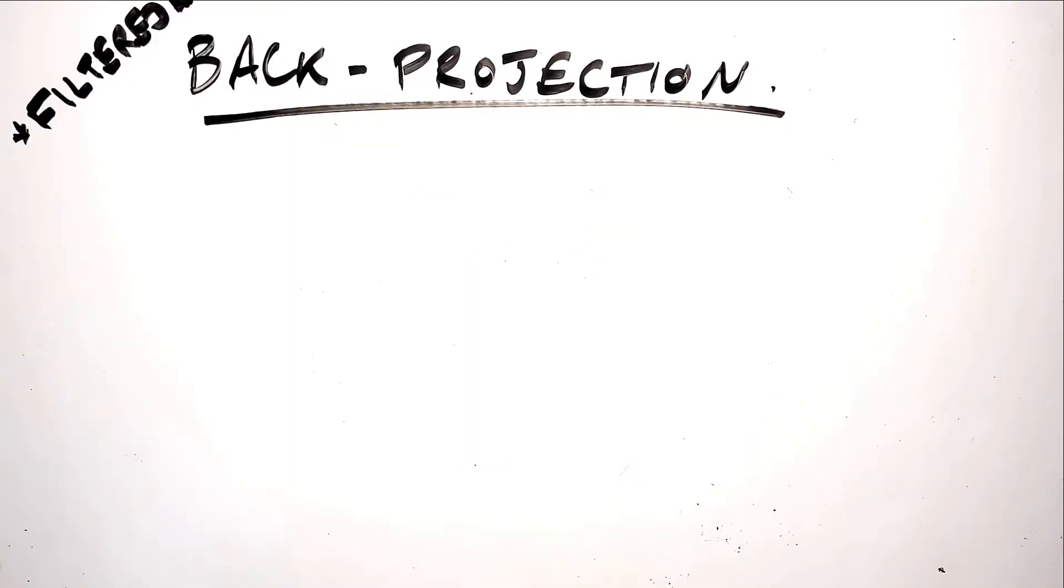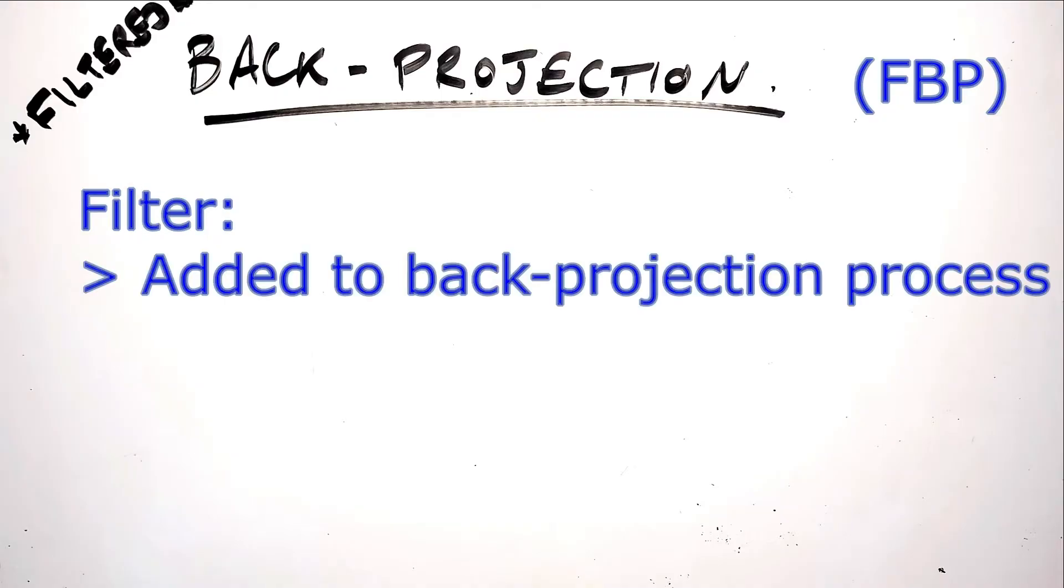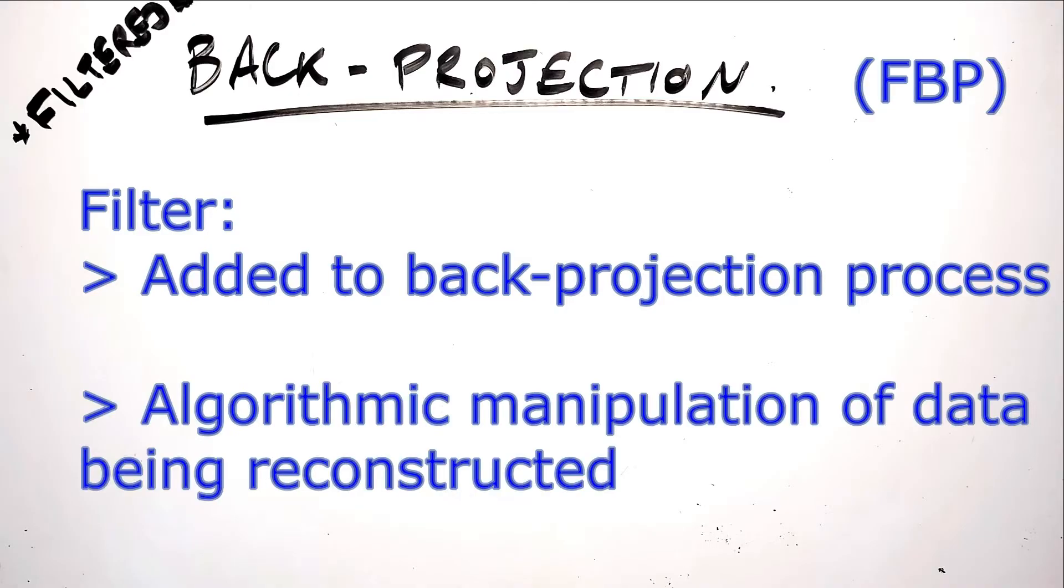The relatively simple process known as back projection is now applied within another process called filtered back projection. All that this means is that a filter is applied to all of the data that's put through the back projection process. A filter, also referred to as a kernel or sometimes just as an algorithm, is a form of data pre-processing and it's an algorithmic manipulation which alters the value of a pixel and its neighboring pixels relative to one another.